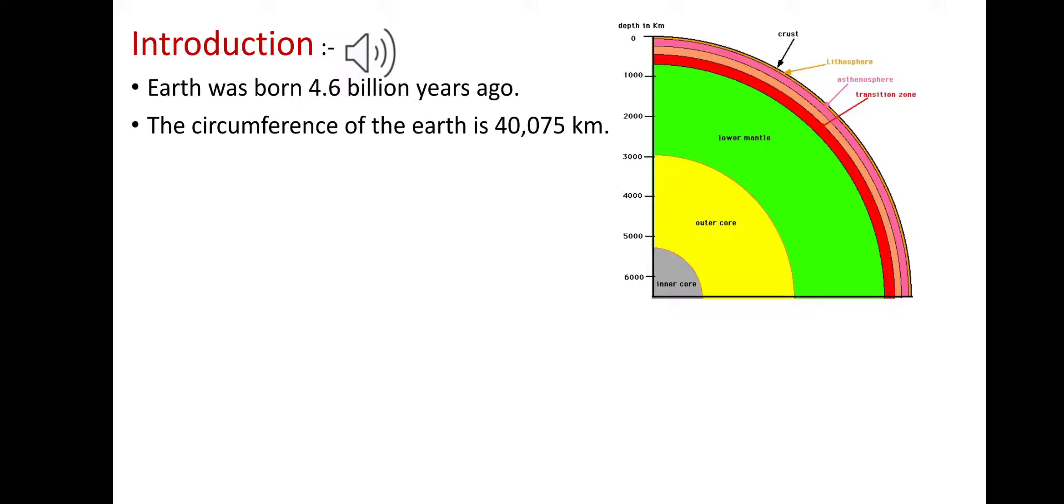The Earth's circumference is 40,075 kilometers and the Earth's radius is 6,370 kilometers. The journey from Earth's surface to the center has been attempted several times.